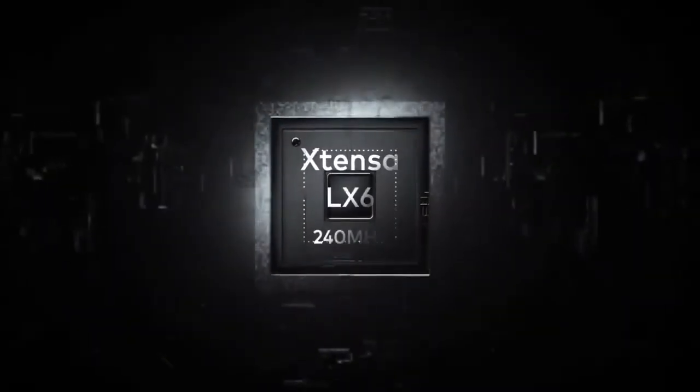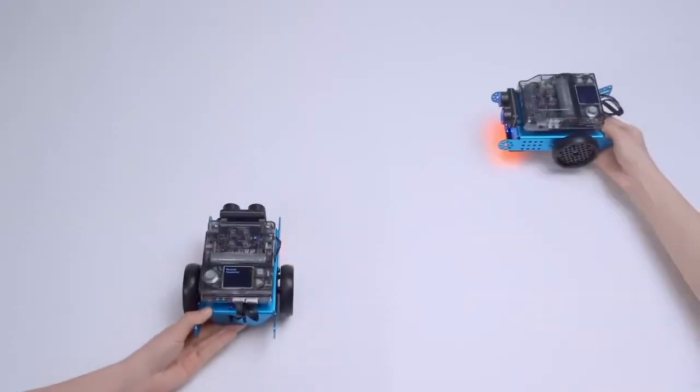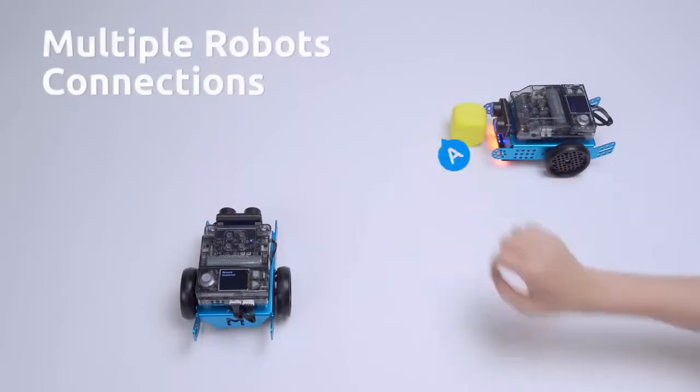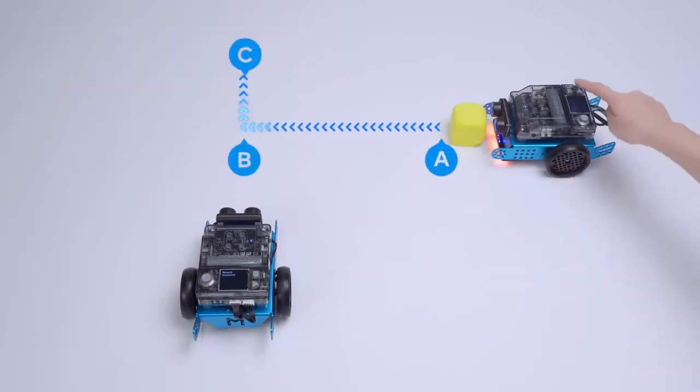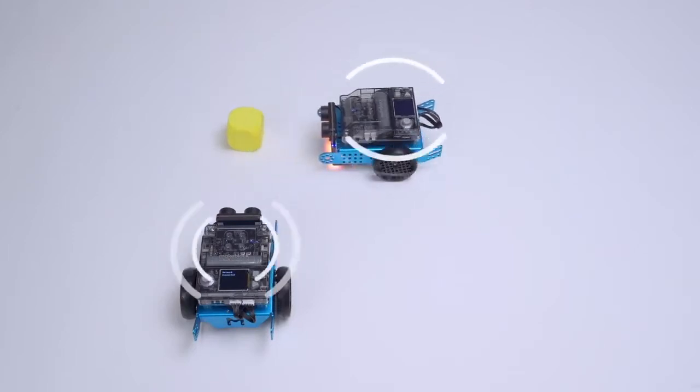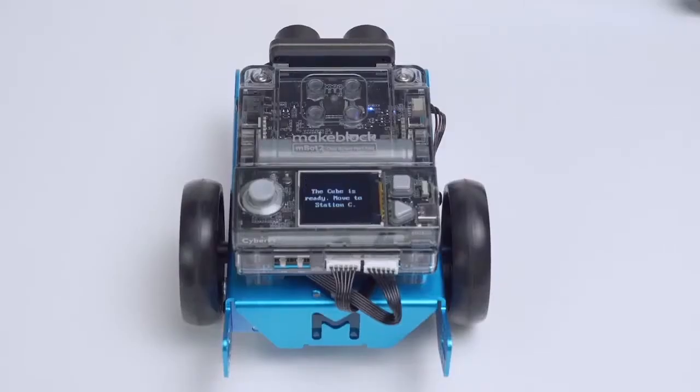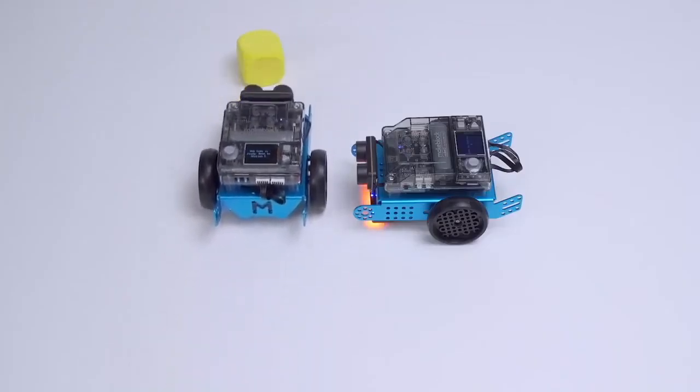Its built-in Wi-Fi module allows for wireless communication. For example, connect multiple M-Bot Neos to create a local network of robots so that robots can communicate with each other, share and collect data and perform tasks together.